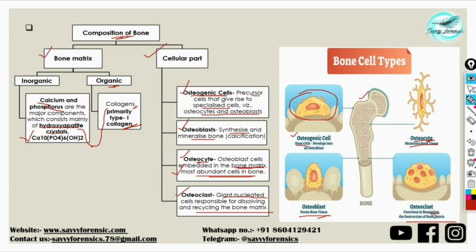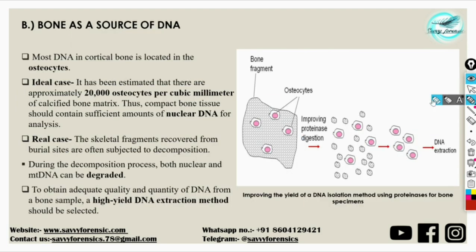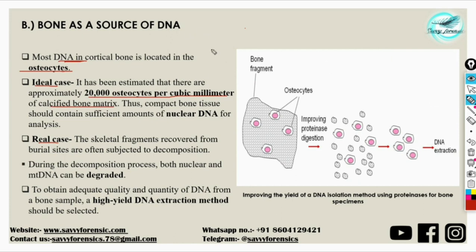Now let's see how bone acts as a source of DNA evidence. Most of the DNA in cortical bone is located in the osteocytes, because osteocytes are embedded in the bone matrix. In an ideal case — a completely skeletonized body with no decomposition — it has been estimated that there are approximately 20,000 osteocytes per cubic millimeter of calcified bone matrix, meaning from a gram of bone we can extract a microgram of DNA. Thus compact bone tissue should contain sufficient amounts of nuclear DNA.